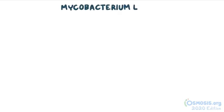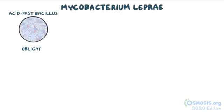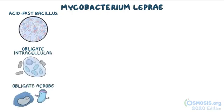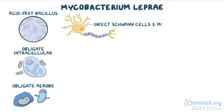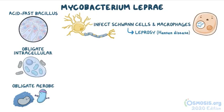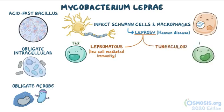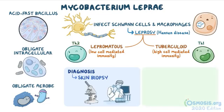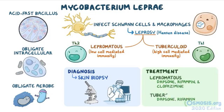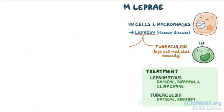As a quick recap: Mycobacterium leprae is an acid-fast bacillus, obligate intracellular aerobe, which cannot be cultivated in vitro. It has the ability to infect Schwann cells and skin macrophages, and causes a disease called leprosy or Hansen disease. According to the type of cell-mediated immunity response, there are two major forms of leprosy — lepromatous, which is the result of Th2 cells or low cell-mediated immunity, and tuberculoid, which is the result of Th1 cells or high cell-mediated immunity. Diagnosis can be done by identifying Mycobacterium leprae in a skin biopsy with microscopy or PCR. Treatment is done with dapsone, rifampin, and clofazimine for the lepromatous form, and dapsone and rifampin for the tuberculoid form.